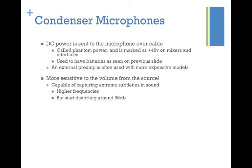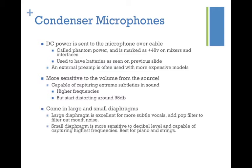The benefit of a condenser microphone is that they are more sensitive to volume from the source and much more capable of capturing extreme subtleties in sound, such as higher frequencies. However, they are much more sensitive to sound pressure level — after about 95 decibels they will start to distort. Condenser microphones might be positioned a little further from the source, whereas dynamic microphones you can put right up in front. For the most part, condenser microphones give you better quality sound, especially for softer or more delicate sound sources.